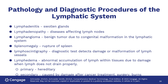Lymphadenopathy is disease of the nodes. Lymphangioma is a benign tumor of the lymph system. Splenomegaly is not rupture of the spleen — 'megaly' is enlargement and 'spleno' is the spleen, so it means enlargement of the spleen.